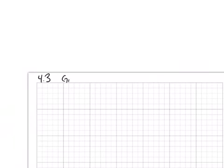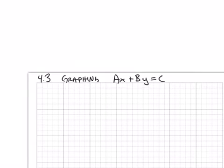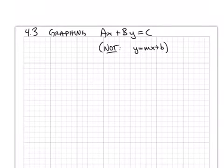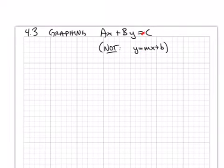Hey everyone, Dankbin here. Today we're going to talk about how to graph lines that don't look the way we're used to. Looking at the title, it's 4.3 — graphing ax plus by equals c. That's not y equals mx plus b. When we look at this kind of equation, what comes out is still a line, even though it's not written like a function and we can't see the slope and intercept inside the equation.